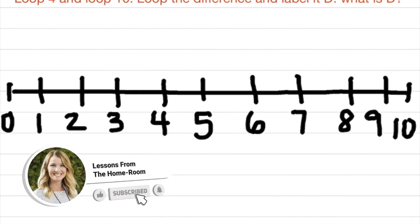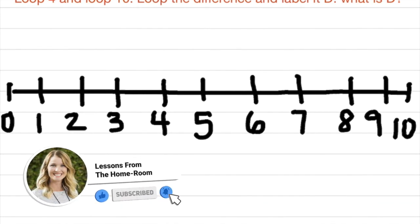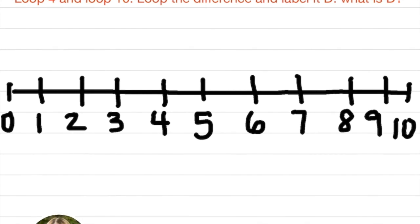We're going to be using a new strategy called number line diagrams. I'm going to start off really simple just to model what it looks like. So here's our number line 0 through 10. What we're going to do is create two loops to find the sum or the difference.